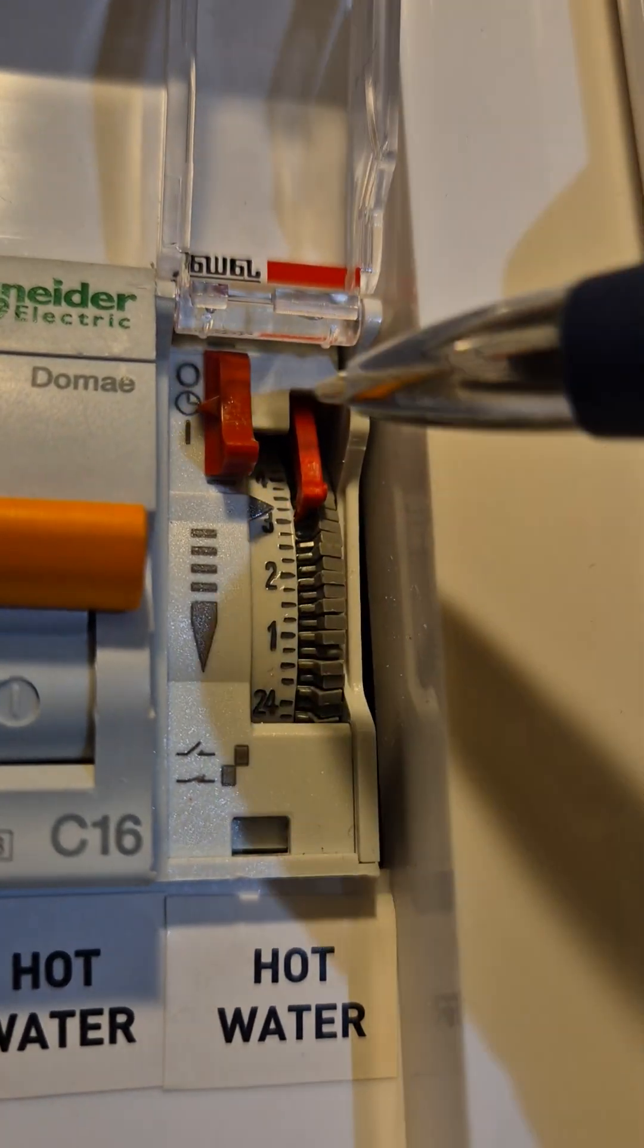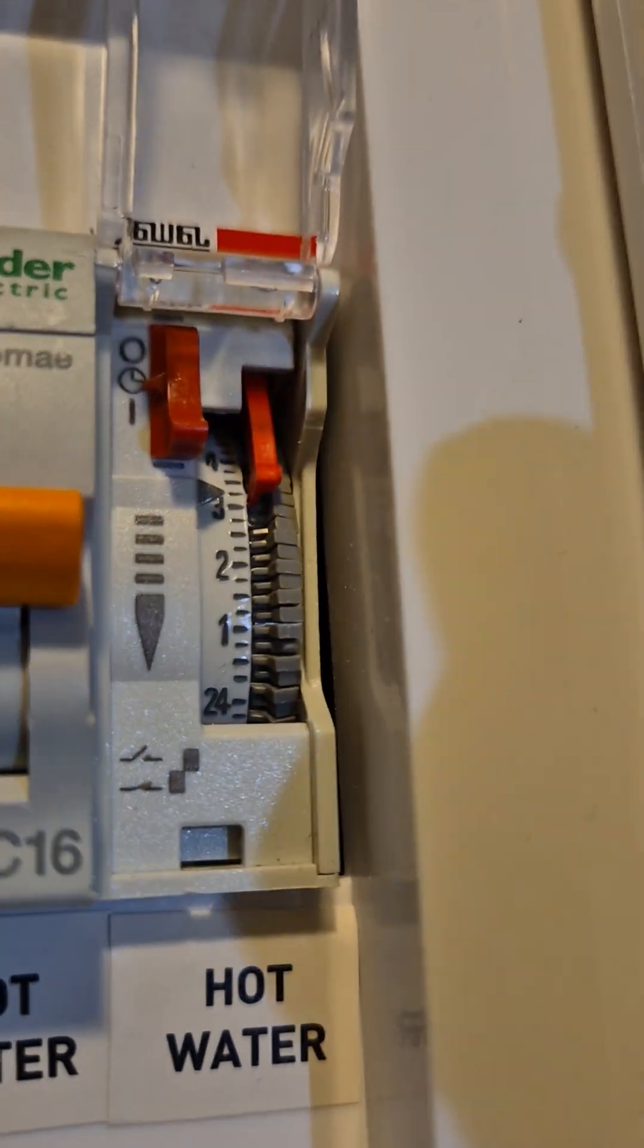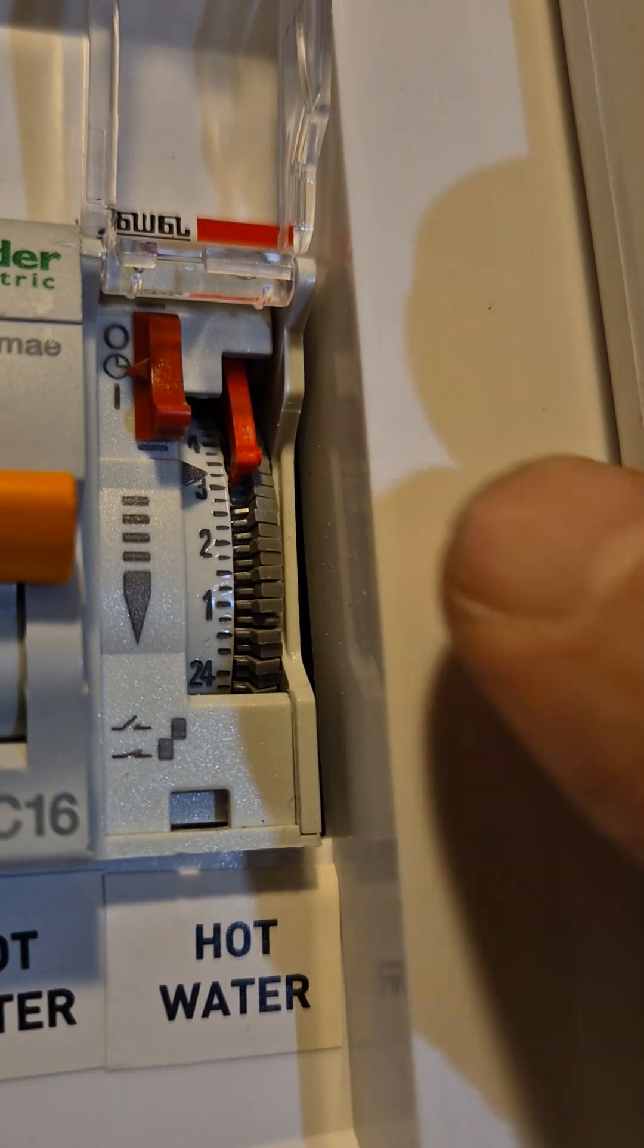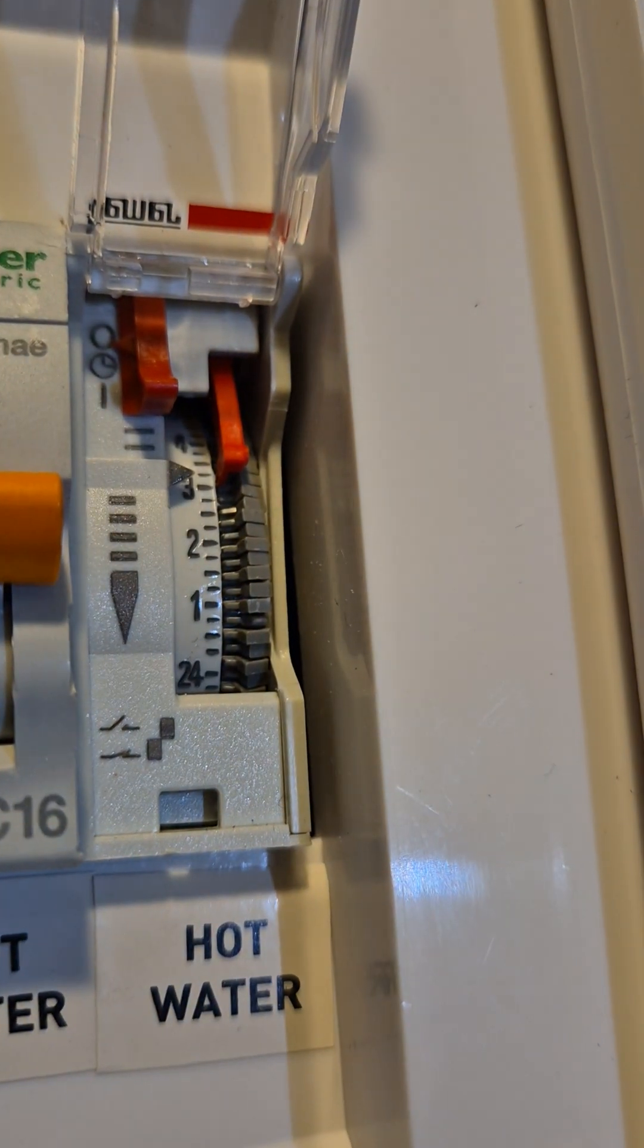Here you see in the top left you've got the timer, it's got a little arrow here. So that's on the timer, it's on the time function. Now if you push that up it just means it's on all the time.